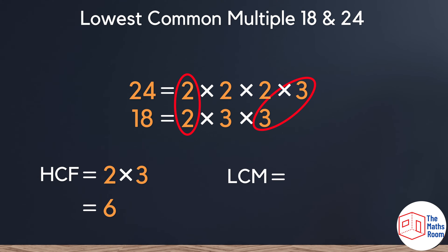Now to find the lowest common multiple, we're going to start with our highest common factor and simply multiply the highest common factor with all the numbers that have not yet been used. Performing this we can see that the lowest common multiple is 72.